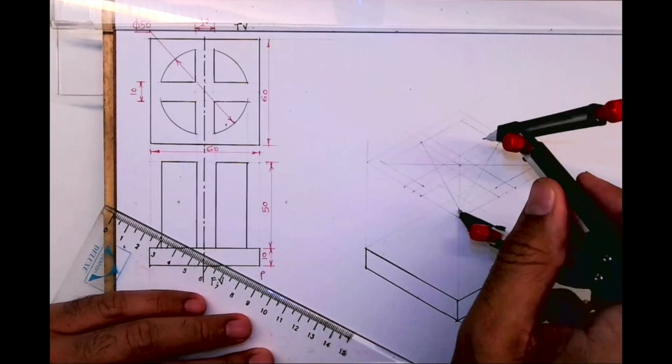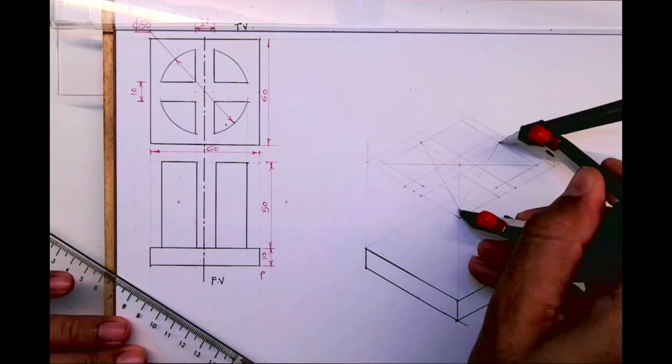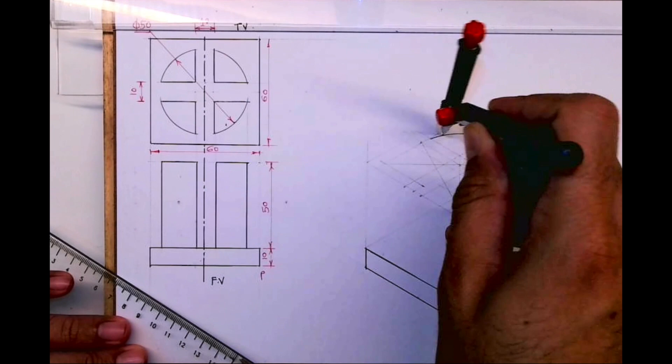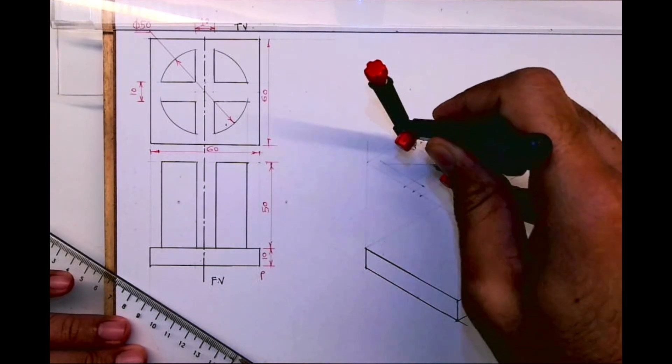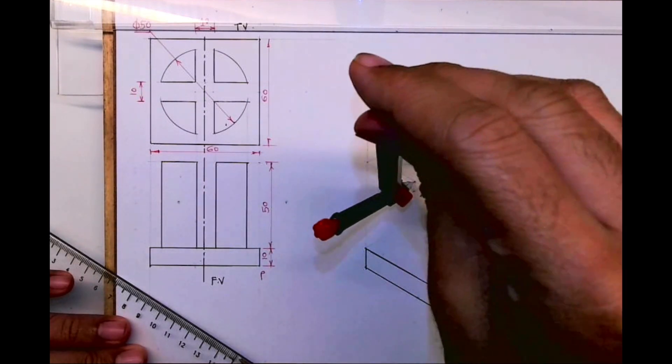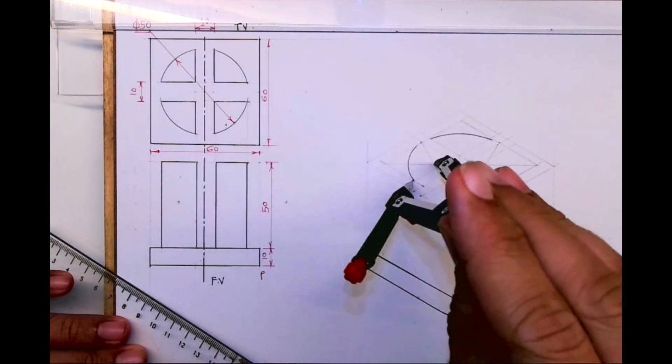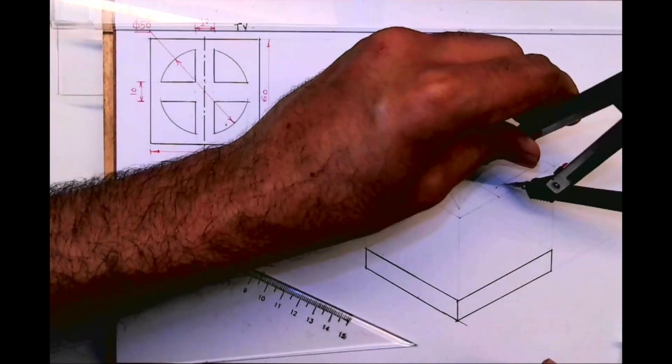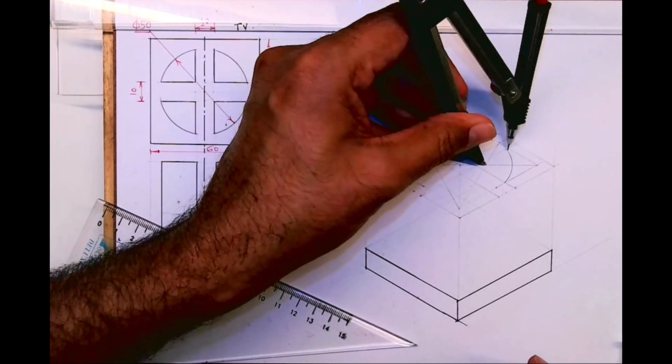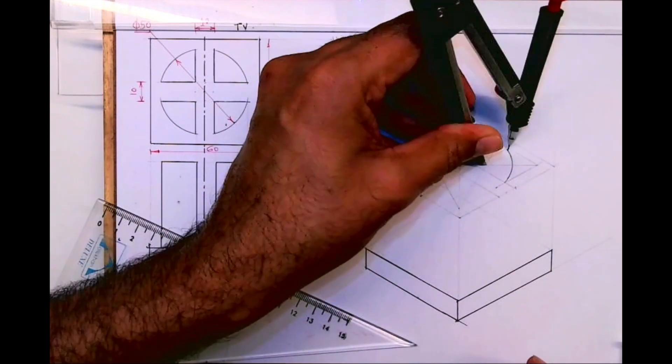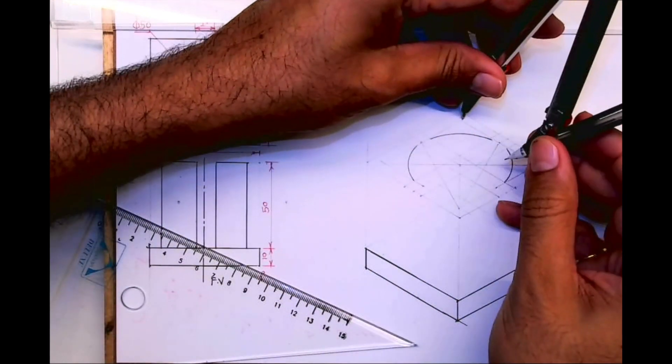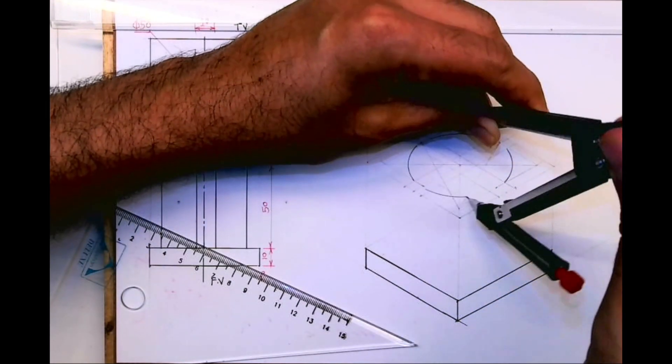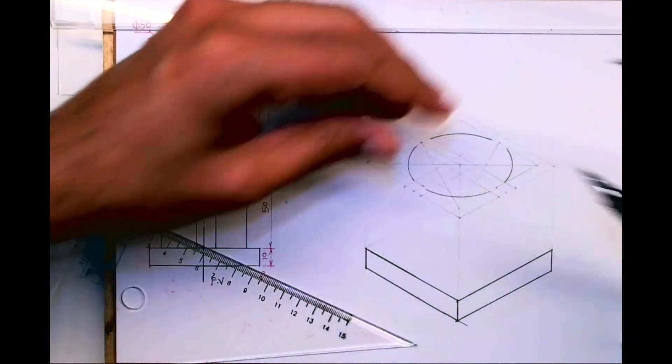After that I will draw circle, but in that also I will make sure that wherever those lines are, there I won't draw circle. You can see I'm not drawing a full circle. So we did this much.